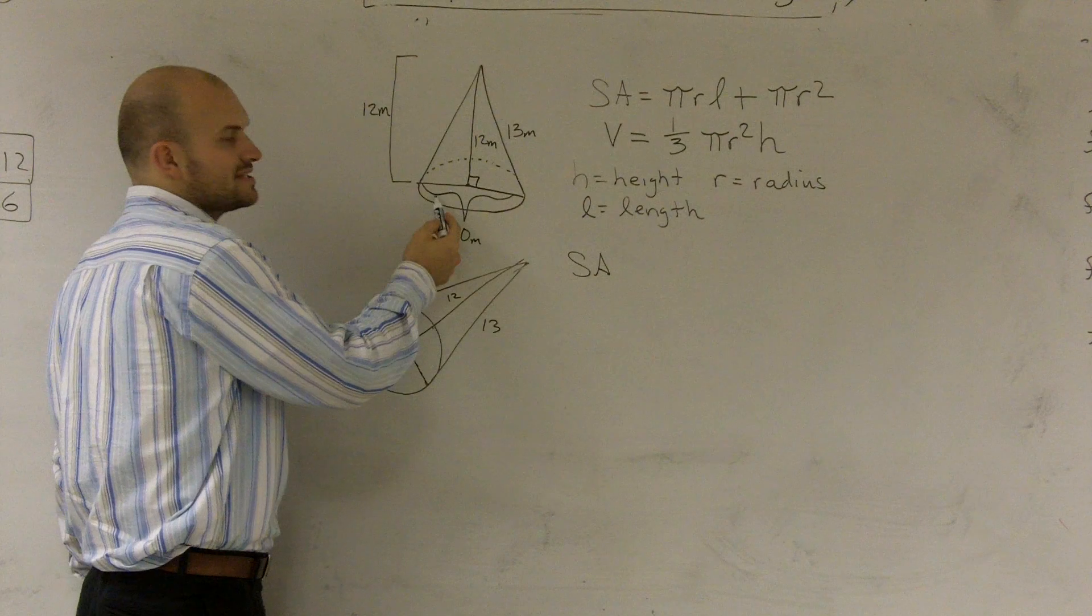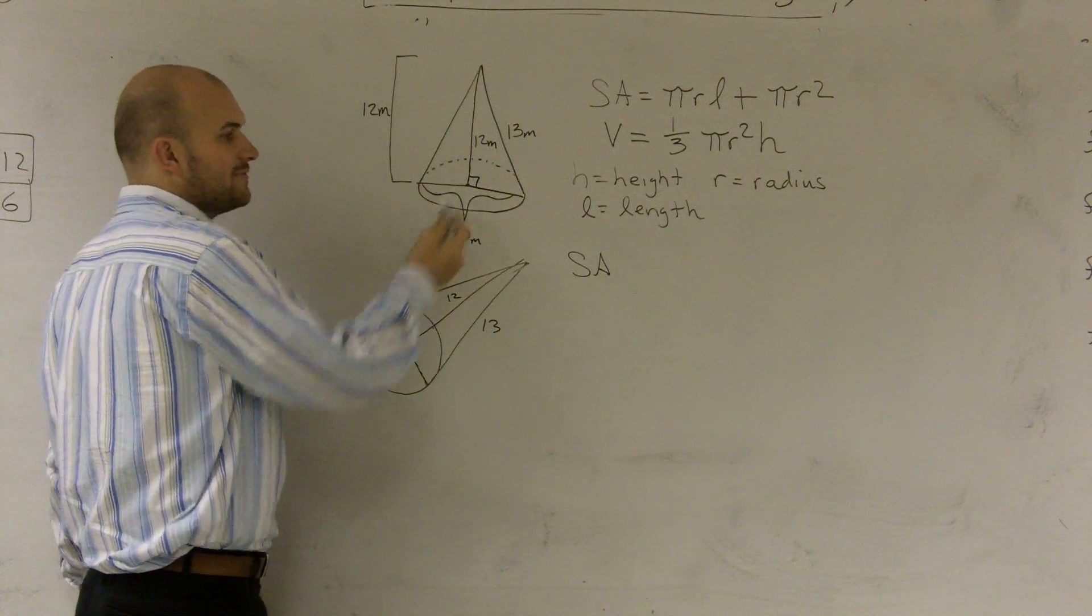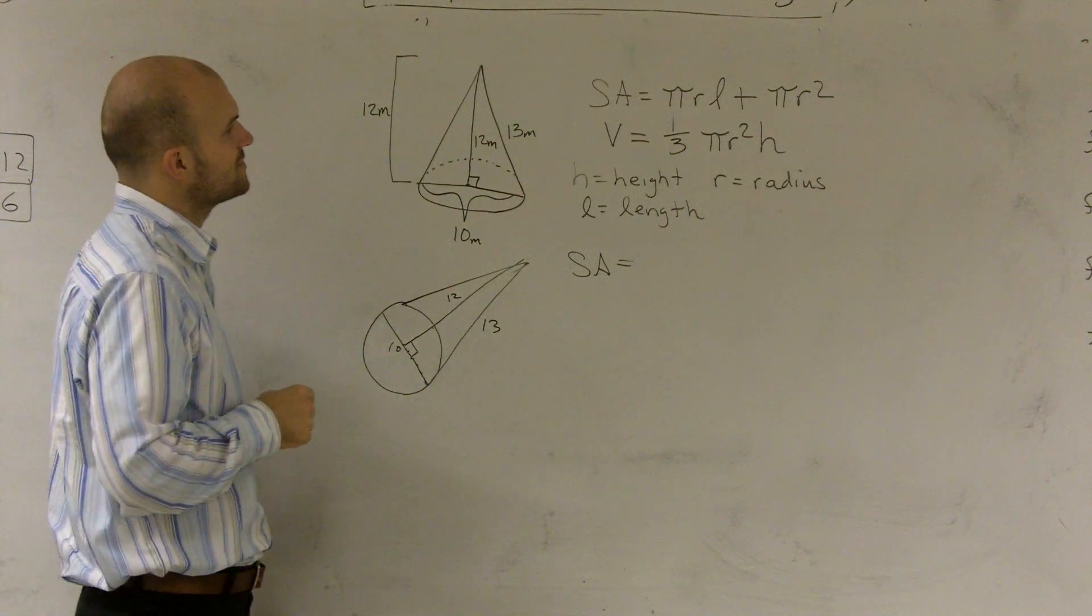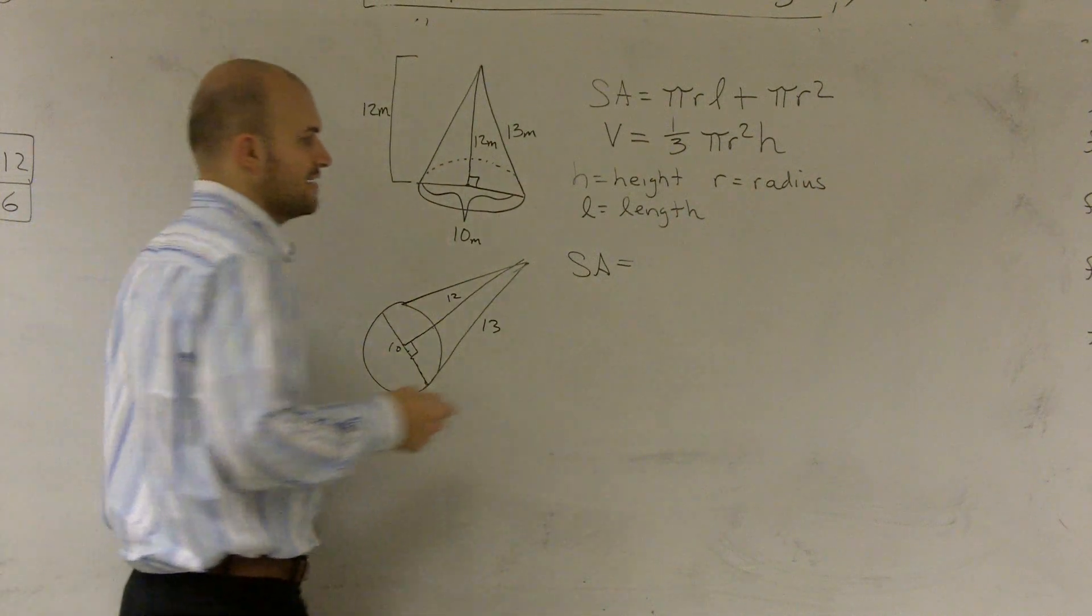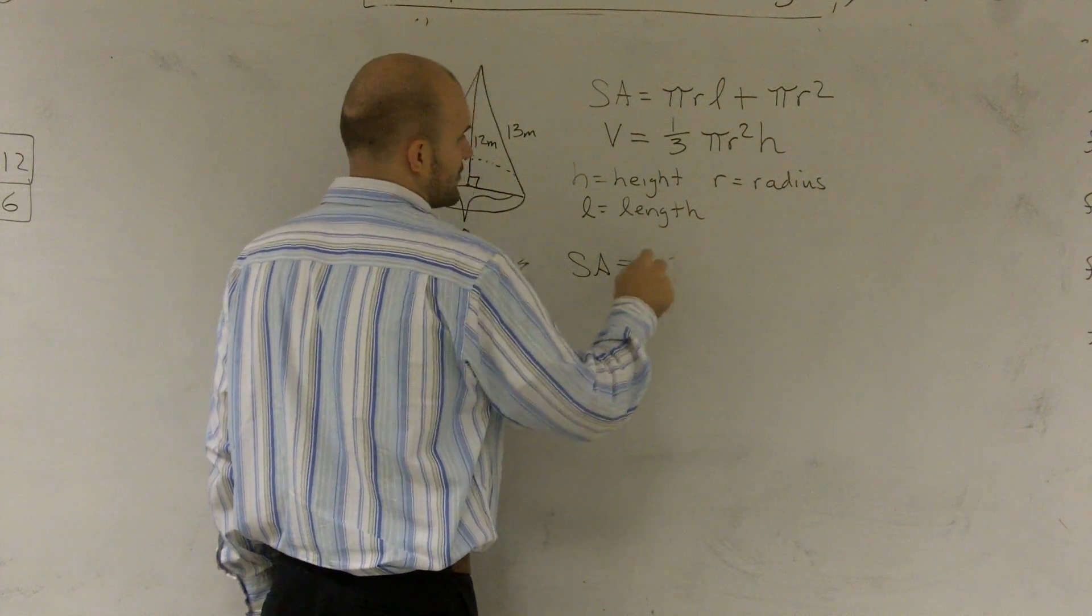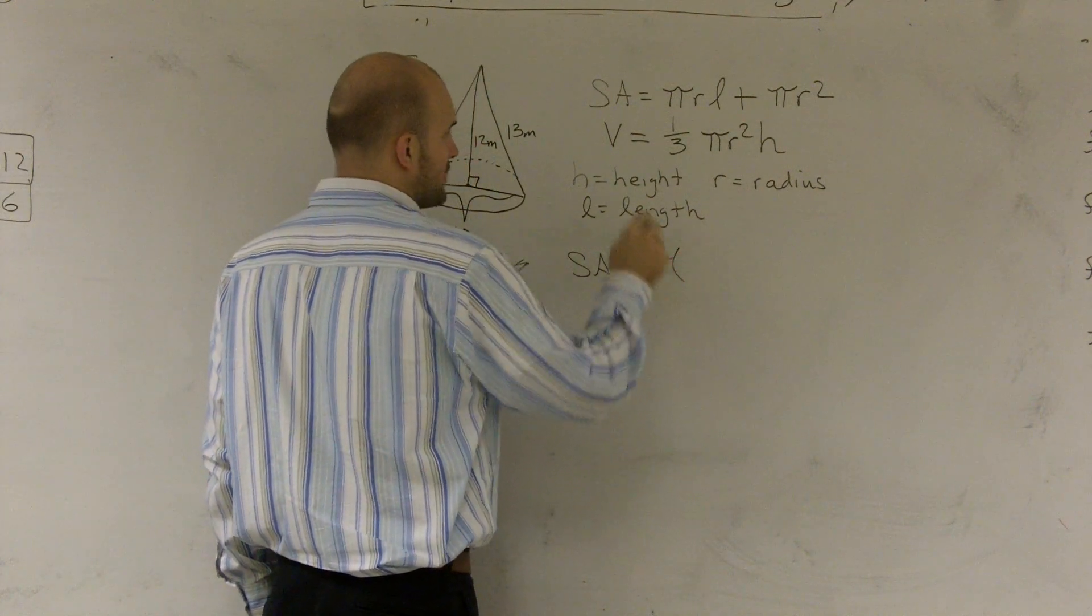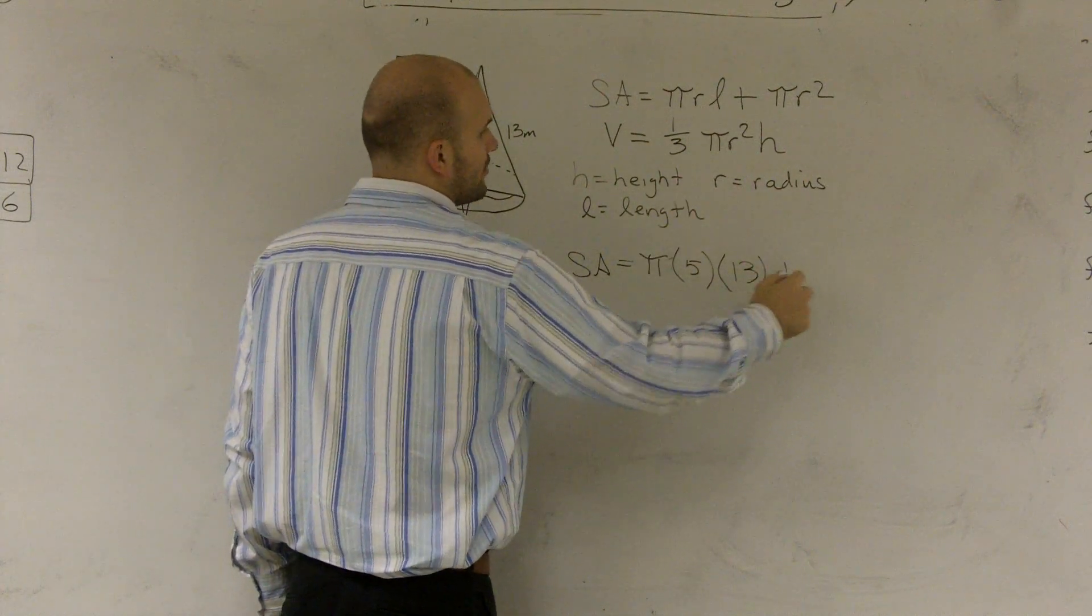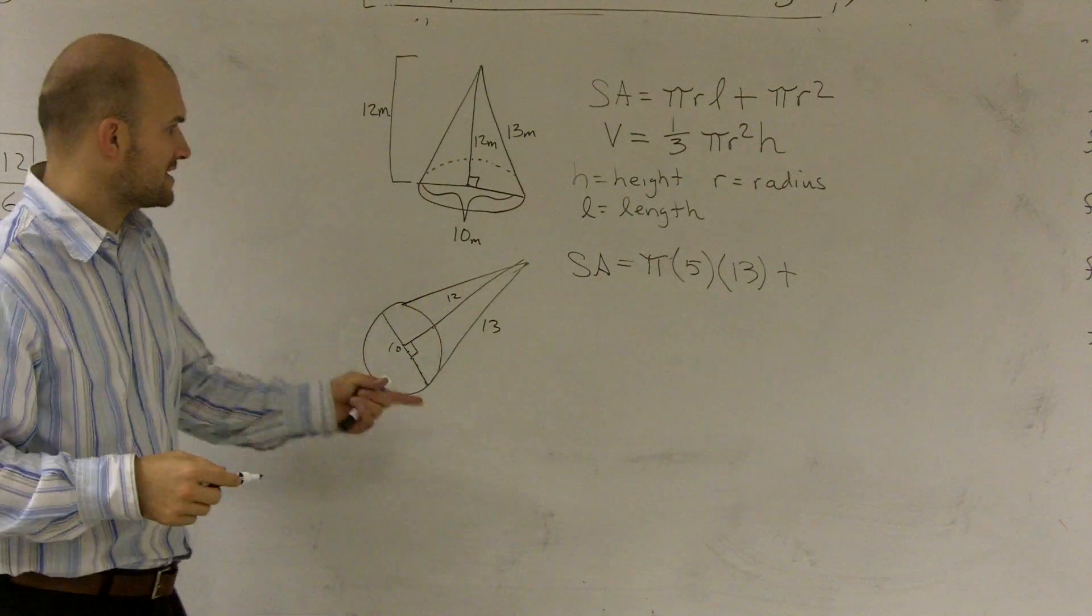The formula is pi times radius times length. My diameter is 10. Remember, radius is half the diameter, so that's 5 times 13, which gives me 65. Let me write it all out: pi times radius (5) times length (13) plus pi times radius squared.